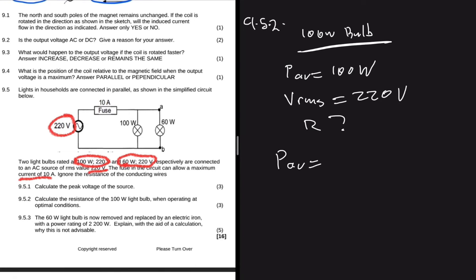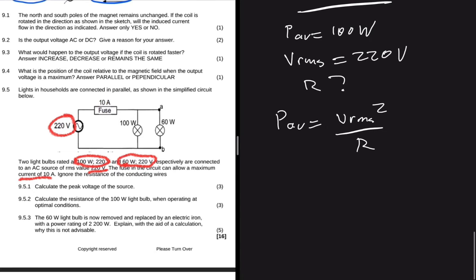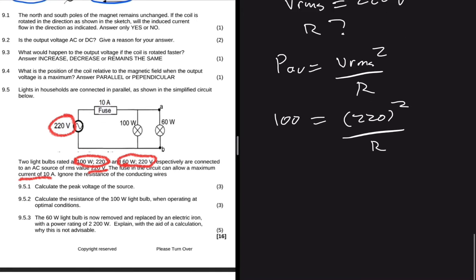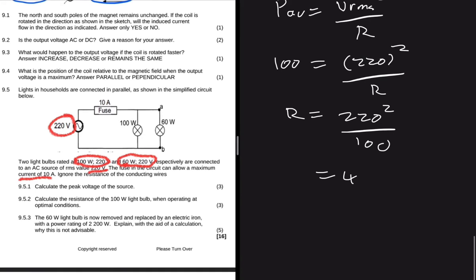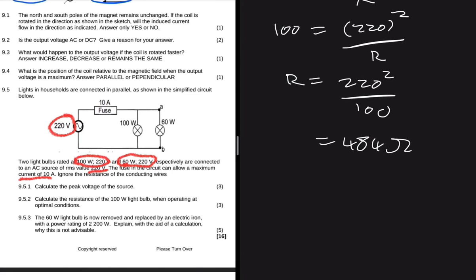So now we're going to have power average equals to V_rms squared divided by resistance. The only difference is that now we have V_rms instead of just V that we were already using. So what is the power average? The power average is 100, and then the V_rms is 220 and then we square it and we divide by the resistance. So the resistance will be 220 squared divided by 100. So let me just punch that in my calculator real quick. That is 220 squared divided by 100 is giving me a value of 484 ohms.